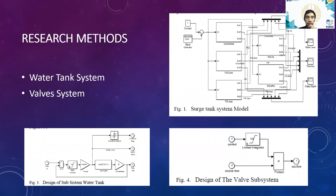For the research methods, there are two parts: the first is the water tank system, and the second part is the valve system. The picture describes the model of the water tank system, shown in Figure 1 as the water tank system model. The design includes a subsystem for the water tank and a design of the valve subsystem, with the modeling done in Simulink MATLAB.